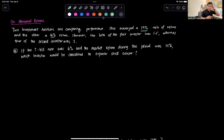The beta of the first investor or advisor was 1.5% and the second was 1. The first part of the question asks, if there exists a T-bill rate which was 6%, so that's the risk-free rate in the market being 6%, and the market return during the period was 14%, which investor would be considered to be the superior stock selector?